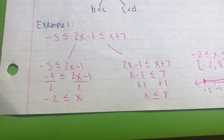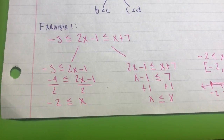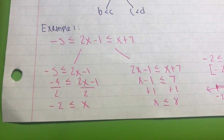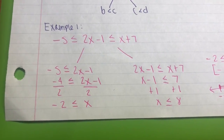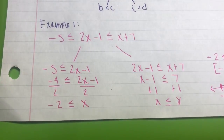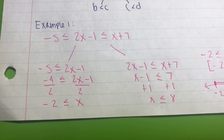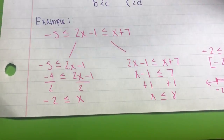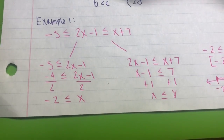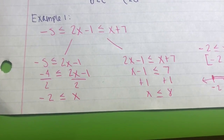For our first example, we have negative 5 is less than or equal to 2x minus 1 is less than or equal to x plus 7. We split this into two smaller inequalities: negative 5 ≤ 2x − 1, and 2x − 1 ≤ x + 7. For the first part, we add 1 to both sides to get negative 4 ≤ 2x, then divide by 2 to get negative 2 ≤ x.